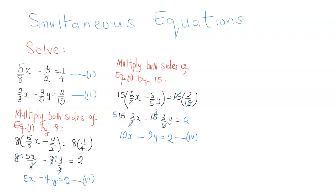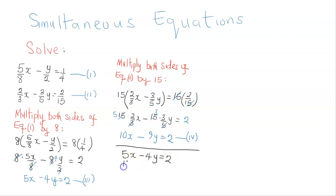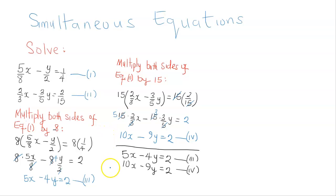So what we now have is a simplified system: equation 3 is 5x minus 4y equals 2, and equation 4 is 10x minus 9y equals 2. We can solve these using either the elimination method or the substitution method. In this video, I'm going to use the elimination method.